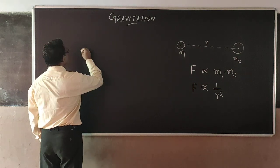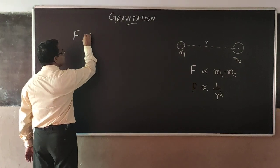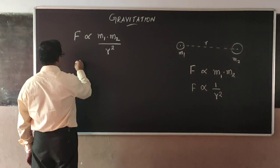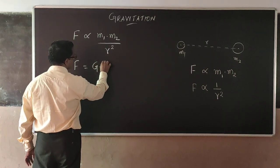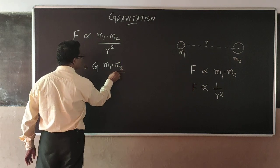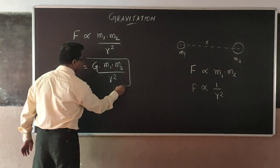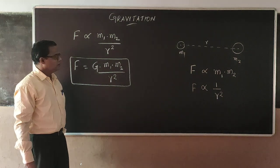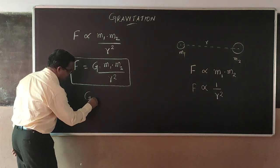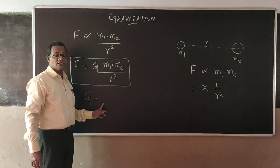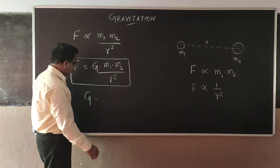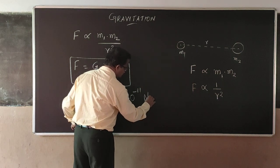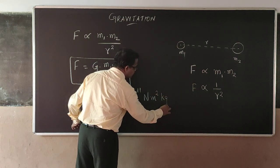From that statement we get the equation: F is proportional to M1 times M2 divided by r squared, and therefore F equals capital G times M1 times M2 divided by r squared. This is the formula for calculating the force between two masses. Here we have introduced a constant called capital G, the universal gravitational constant, whose value is 6.67 times 10 to the minus 11 Newton meter squared per kilogram squared.